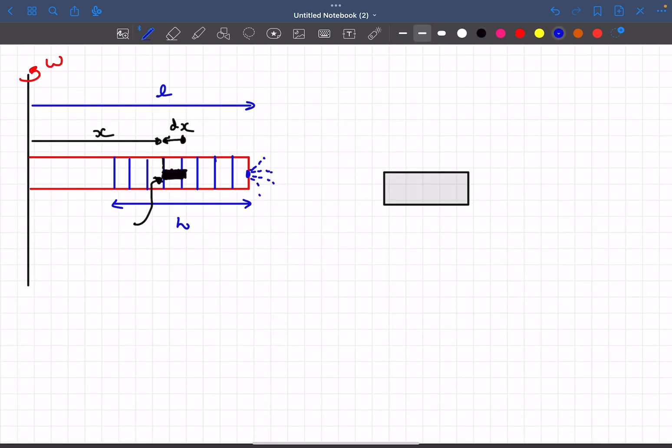This is the zoomed version of the fluid element. Let's say the pressure towards the left at distance x from the axis is P, and at distance x plus dx the pressure is P plus dP. What are the other forces?